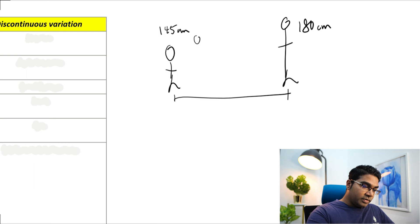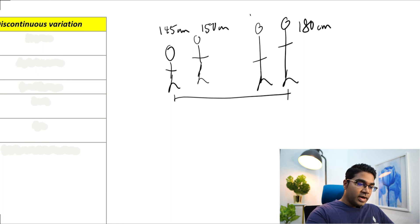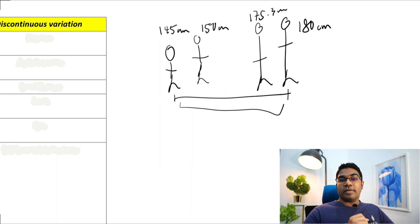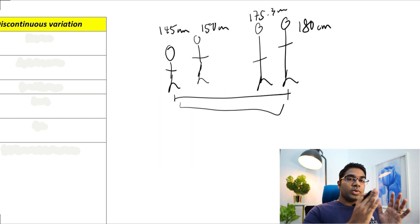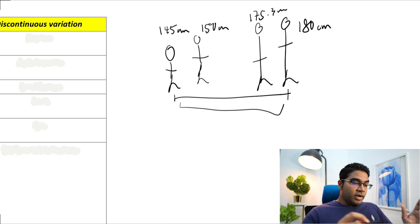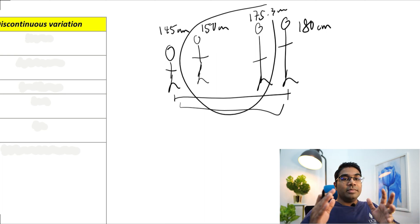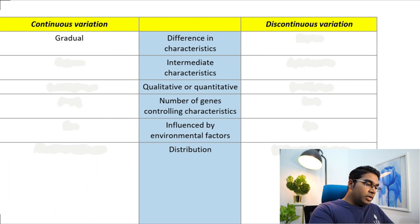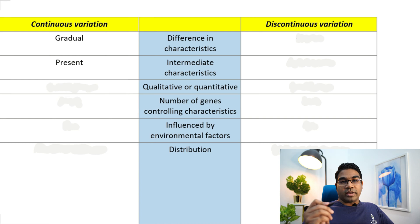For example, somebody can be 150 cm tall, somebody else could be 175.3 centimeters tall. There is any number of heights between 145 and 180 centimeters. This is known as a gradual difference in characteristics, and everything in between is called an intermediate characteristic. Therefore, in continuous variation, we do have intermediate characteristics.